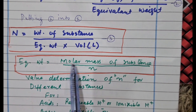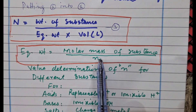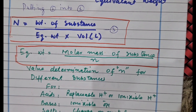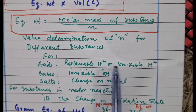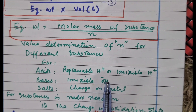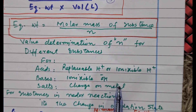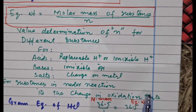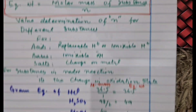Equivalent weight is actually molar mass of a substance divided by n. The value of n differs for different substances: for acids it is the number of replaceable or ionizable H⁺ ions; for bases it is the number of ionizable or replaceable OH⁻ ions; for salts it is the charge on the metal ion; and for substances in redox reactions it is the change in oxidation state.